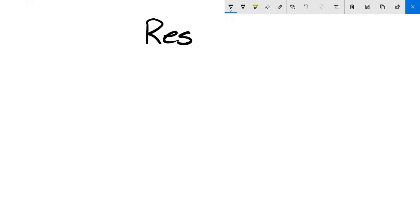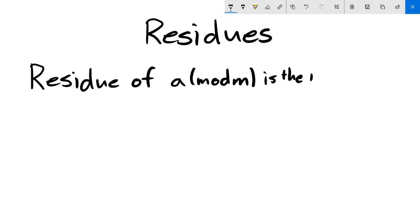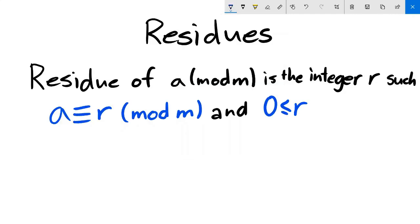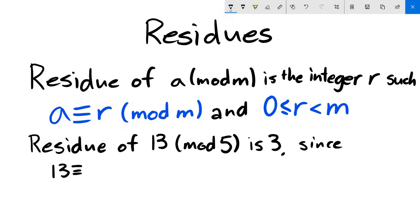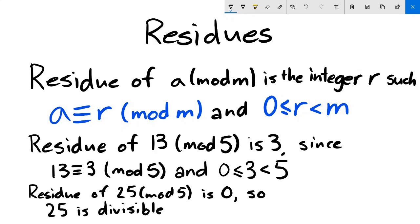Next, let's define residues, which is actually just a fancy, more formal way to say remainder. Formally, given a modulus m, the residue of an integer a is a unique integer r, such that a is congruent to r mod m, and 0 is less than or equal to r is less than m. For example, the residue of 13 mod 5 is 3 since 13 is congruent to 3 mod 5, and 0 ≤ 3 < 5. One special case is when the residue of a number is 0. In this case, this means the number is divisible by the modulus.